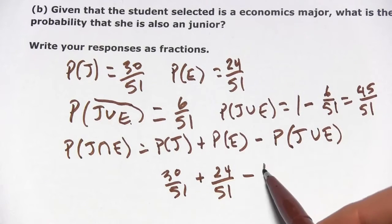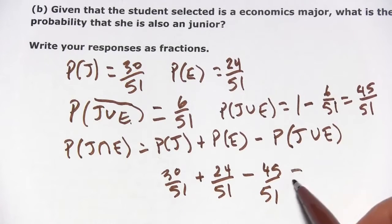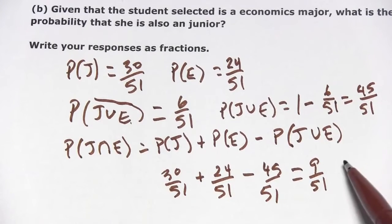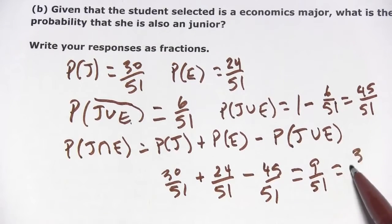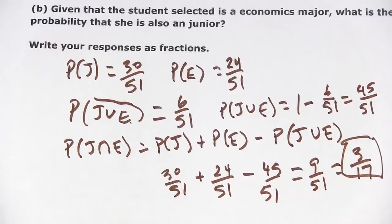That is 45 51sts. So we crunch the numbers on that, and that is 9 51sts. I think we can simplify that though. Yeah, 3 17ths. So that is part A. That is the intersection.